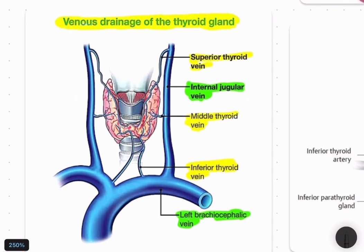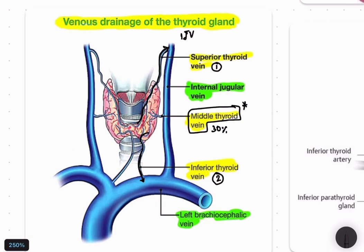For venous drainage, we have two main veins: the superior thyroid vein and the inferior thyroid vein. The superior thyroid vein drains the upper pole and middle portion directly into the internal jugular vein. The inferior thyroid vein drains into the brachiocephalic vein. In about 30% of patients there is also a middle thyroid vein, which is very important because it is the first vein to be ligated during thyroidectomy. It drains into the internal jugular vein.